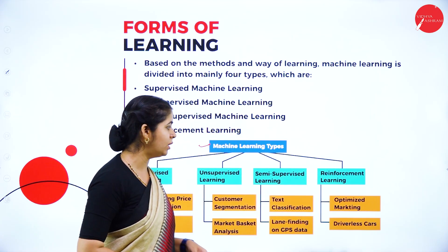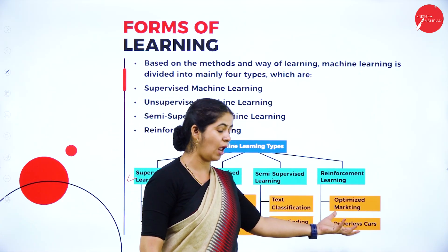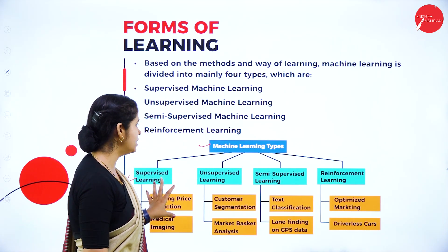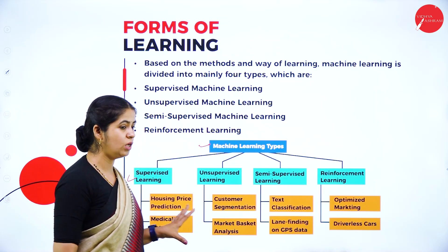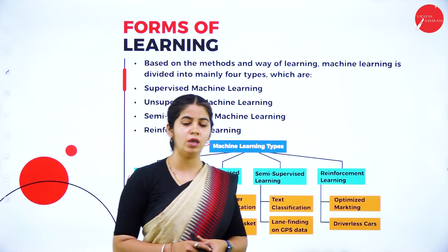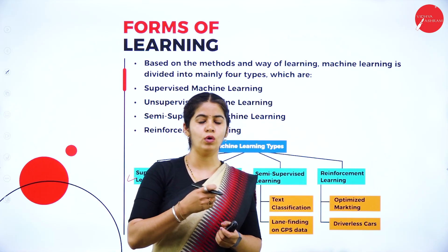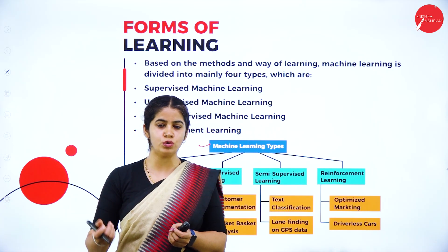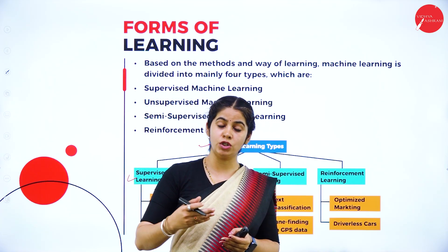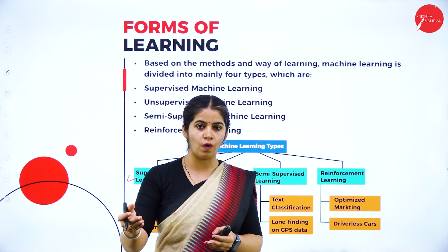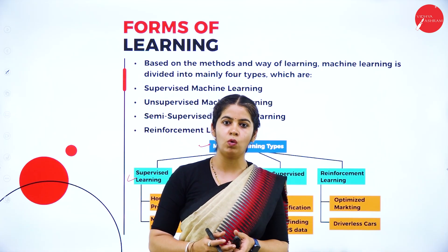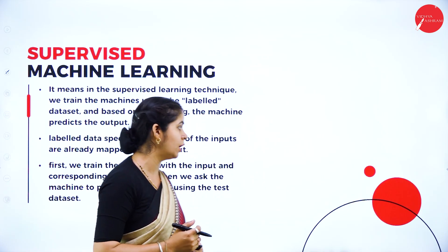The best example for machine learning is your online shopping. Whenever you do shopping and put some keywords for clothing, sneakers, shoes, or handbags, the next time you open the site it will suggest whatever you had searched for. That is the most relatable example we can give for machine learning.